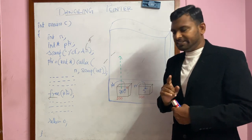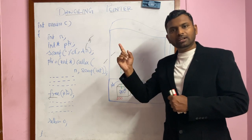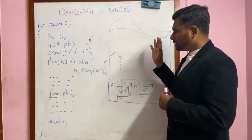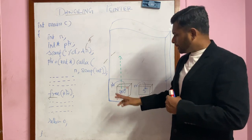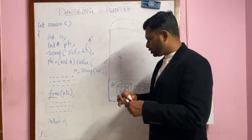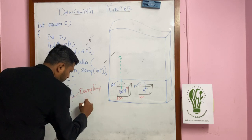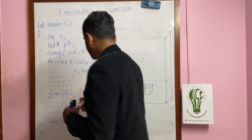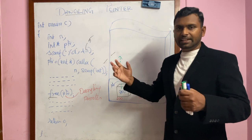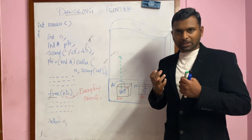Unfortunately, after calling free(), the pointer that was holding the address — say address 200 — will still be holding that address, even though that memory has already been released. The scenario where a pointer is pointing to a memory location that has been released is called a dangling pointer.